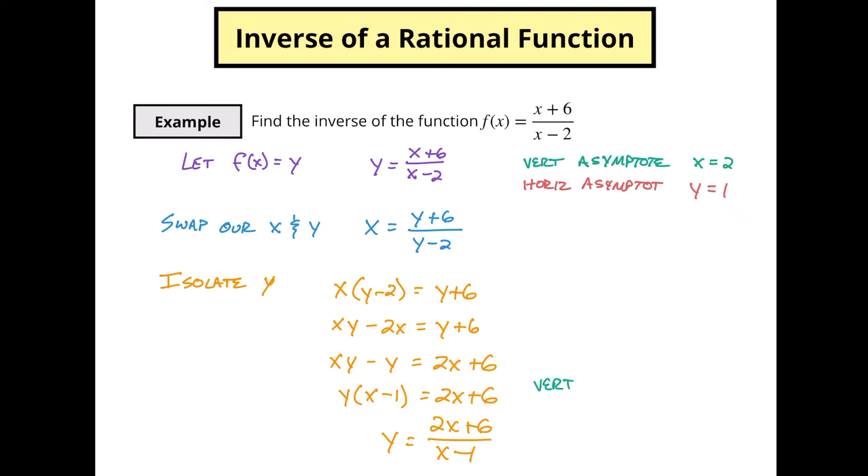So if we look down here, our vertical asymptote is when our denominator is equal to 0, so that's going to be when x equals 1. And our horizontal asymptote is essentially the coefficients of our x values here when we have the same degree, and so here our horizontal asymptote is y equals 2. Hey, look at that! These two things have been reversed.